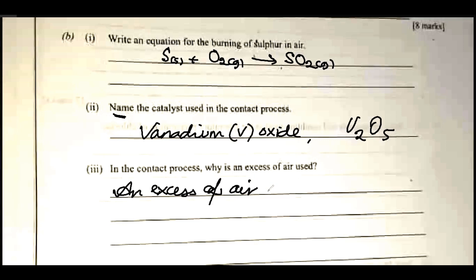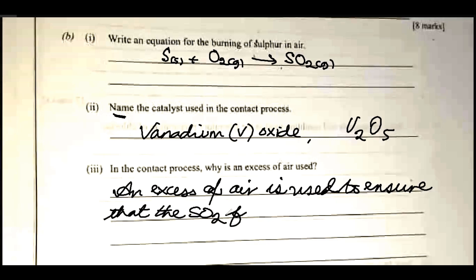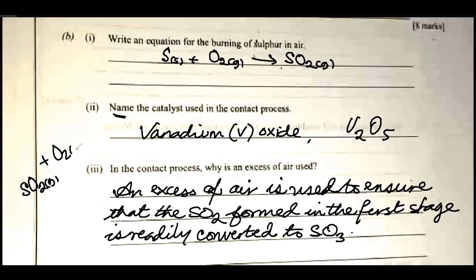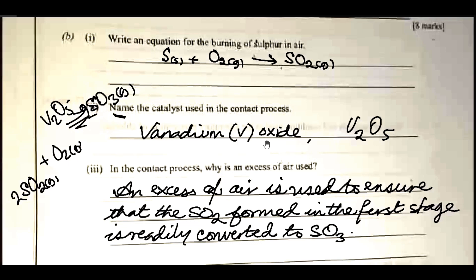Why is an excess of air used? An excess of air is used to ensure that the SO₂ formed in the first stage is readily converted to SO₃. The equation is: 2SO₂ (g) + O₂ (g) → 2SO₃ (g) in the presence of V₂O₅. The excess air ensures SO₂ is converted immediately to SO₃ so that it does not escape into the atmosphere and pollute the environment.